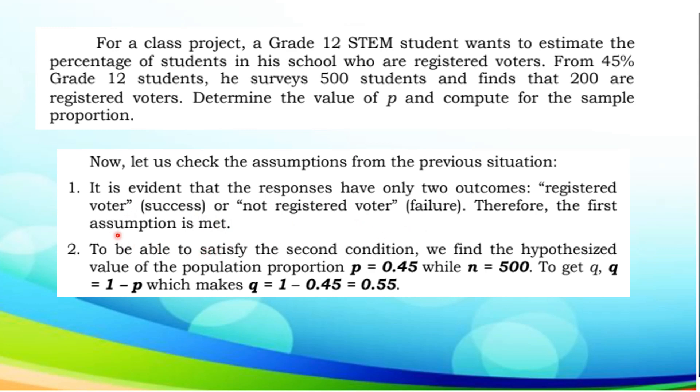To be able to satisfy the second condition, we find that the hypothesized value of the population proportion is 0.45, while n equals 500. To get q, we are going to use q equals 1 minus p, which makes 1 minus 0.45 equals 0.55. Thus, we get the value of q which is 0.55.